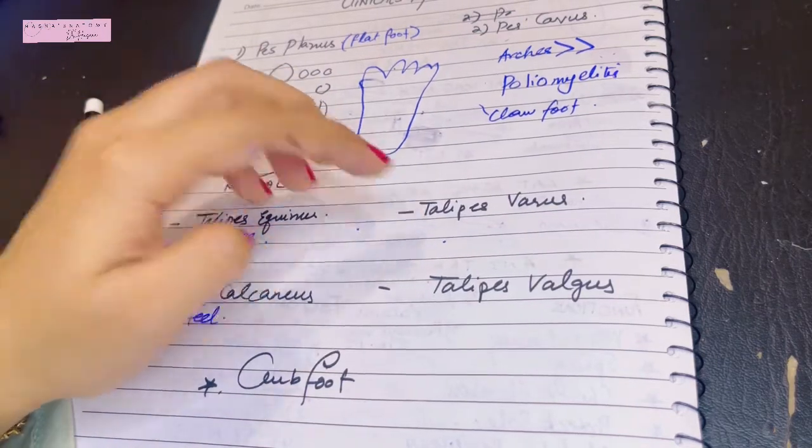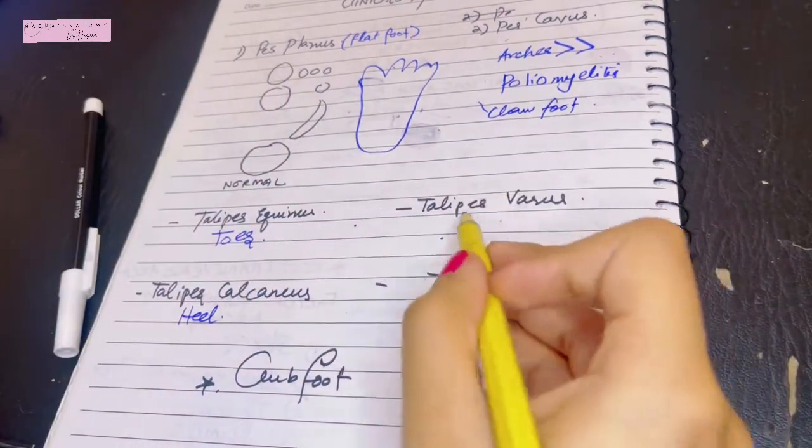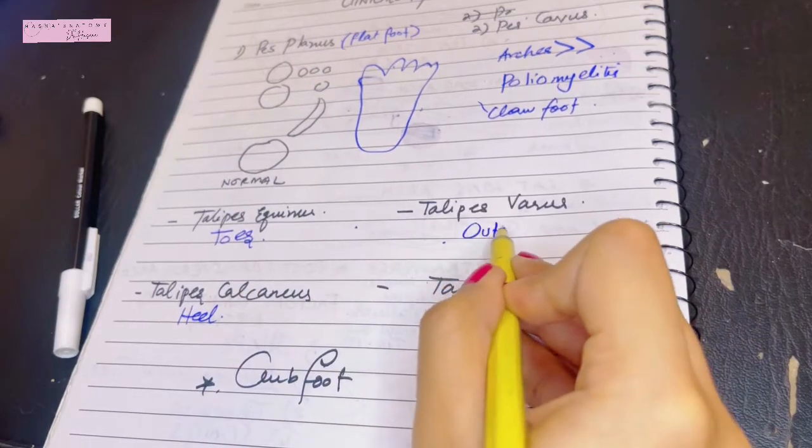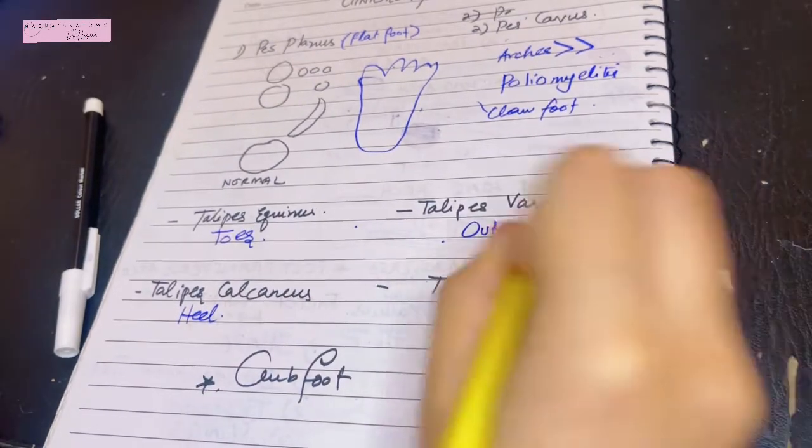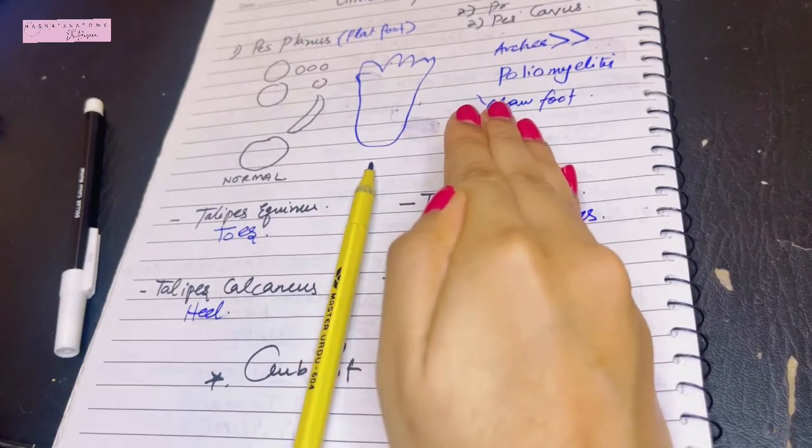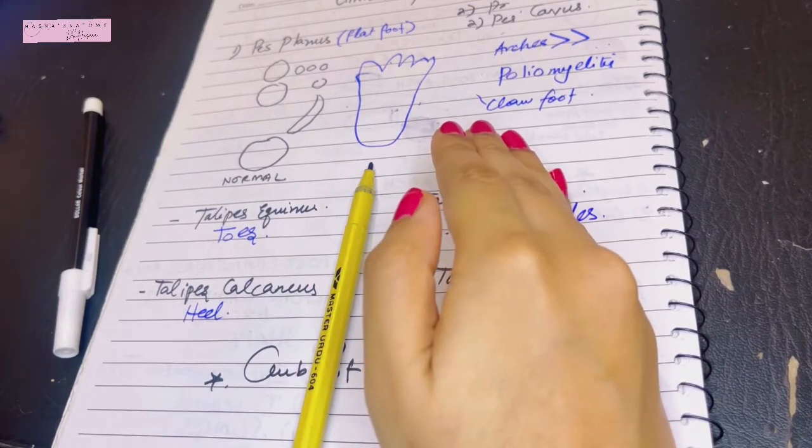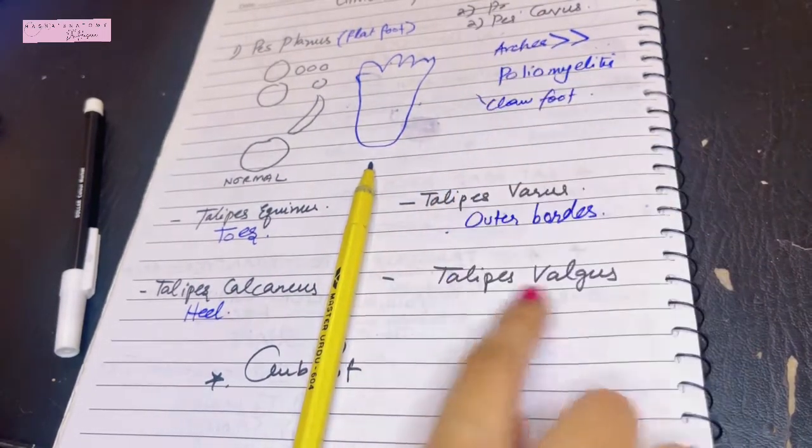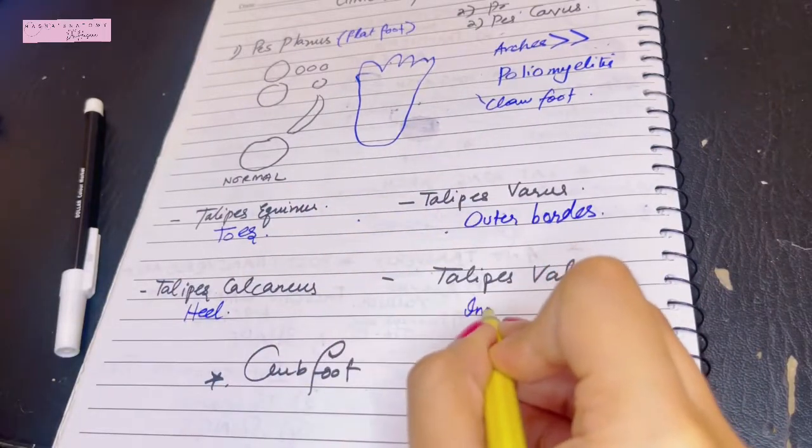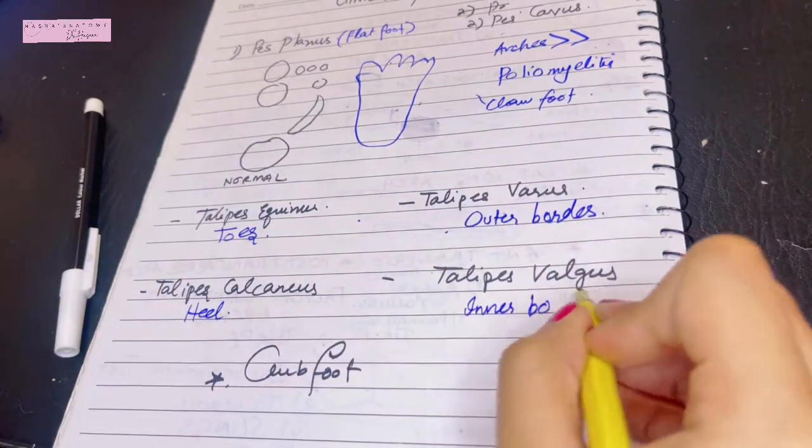Then there is a deformity called talipes varus. In talipes varus the person will walk on his outer border of the foot, they will walk literally like that. Their outer border or lateral border will be on the ground and they will be walking. Talipes valgus is when the inner border of the foot is on the ground - they're going to be walking on the inner border or in an everted posture.